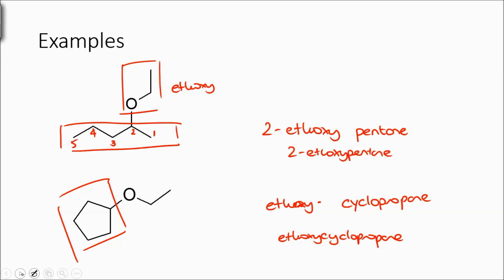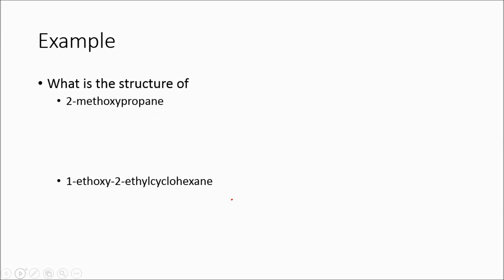Let's look at a couple other examples. Here, I have 2-methoxypropane. Let's draw out propane. One, two, three, four, five. One, two. In the two position, I have a methoxy group - oxygen, and then a methyl group here.